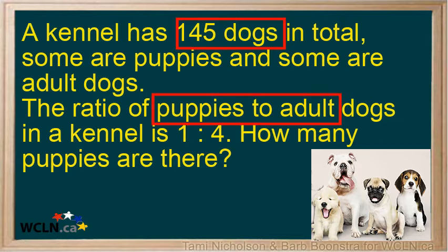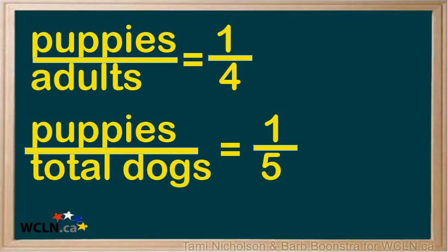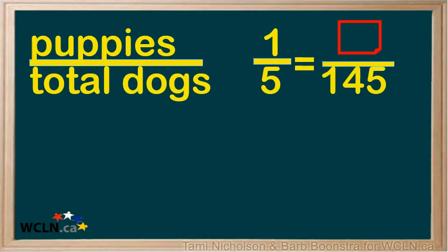The ratio given is puppies to adult dogs. We can write the ratio of puppies to adult dogs as 1 to 4. Since we have information about the total number of dogs — 145 dogs — we will have to write a part-to-whole ratio. The total number of dogs is 1 plus 4, which is 5 dogs in total. The ratio of puppies to dogs is 1 to 5. Write the ratio that compares puppies to dogs, filling in the known number of dogs. Since you know the total number of dogs is 145, that number goes on the bottom of the ratio to match the total.